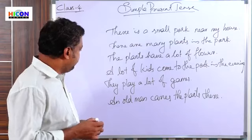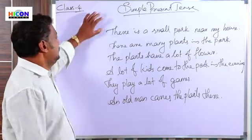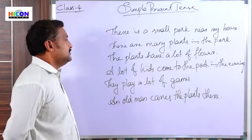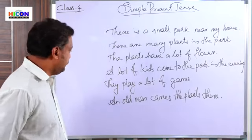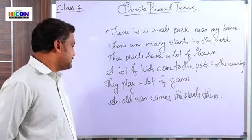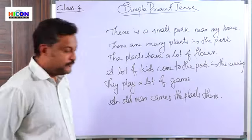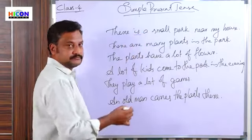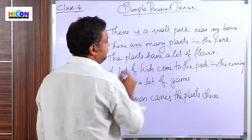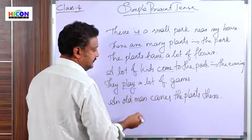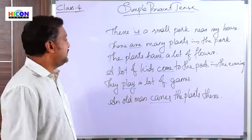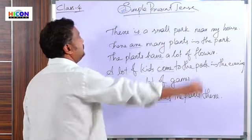So one, two, three, four, five, six sentences I have written. There is a small park near my house. There are many plants in the park. The plants have a lot of flowers. A lot of kids come to the park in the evening. They play a lot of games. An old man waters the plants there. In these six sentences, is, are, have, come, play, and waters are all verbs used in the simple present tense form.